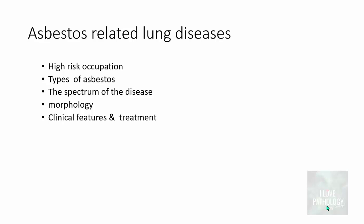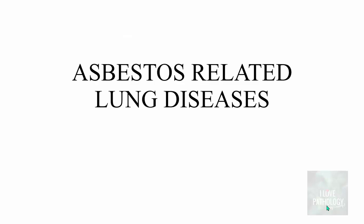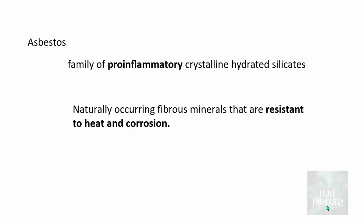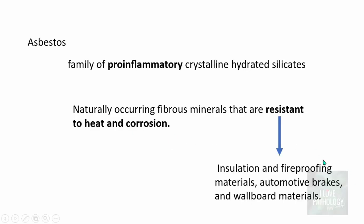We will cover high-risk occupations, the types of asbestos, the spectrum of the disease, the morphological features of each entity, and clinical features and treatment. Asbestos belongs to a family of pro-inflammatory crystalline hydrated silicates. These are naturally occurring fibrous minerals which are resistant to heat and corrosion, and because of this property they are used in various insulation and fireproofing materials, automotive brakes, and wallboard materials. All those people involved in manufacturing these materials are at high risk for asbestos-related lung diseases.